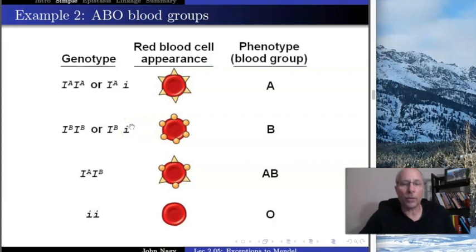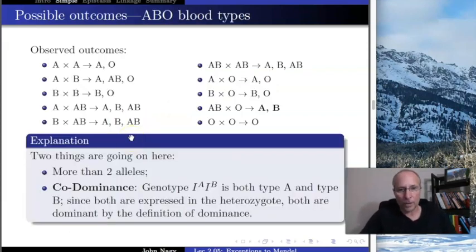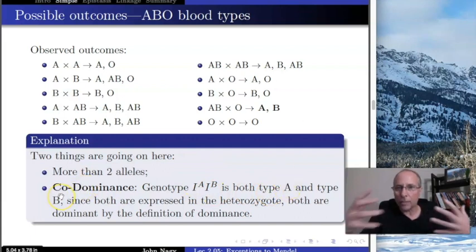That's what's happening here. We have this situation of codominance. In this case, the big I^A, big I^B individual is both type A and type B.